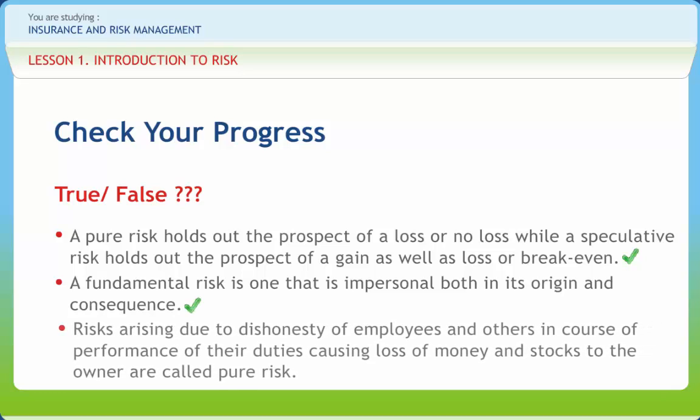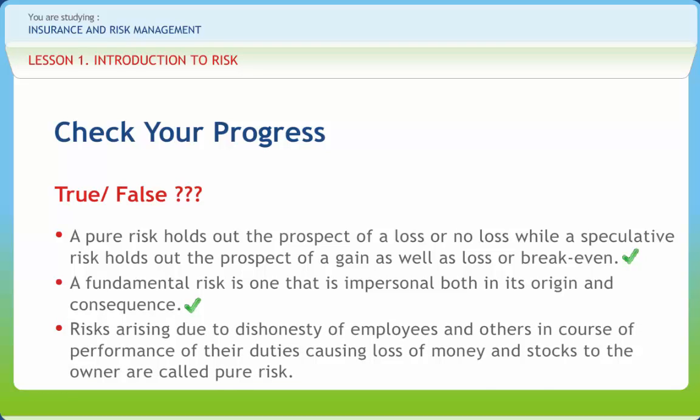Risk arising due to dishonesty of employees and others in course of performance of their duties causing loss of money and stocks to the owner are called pure risk. Right or wrong? Wrong.